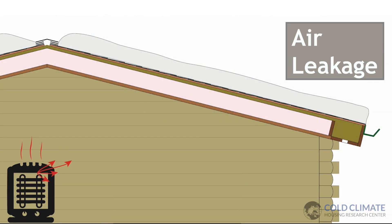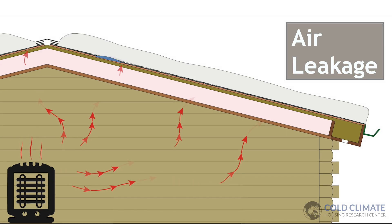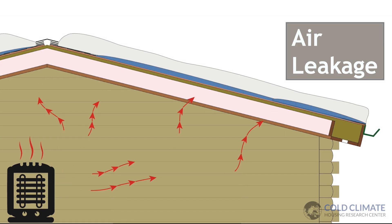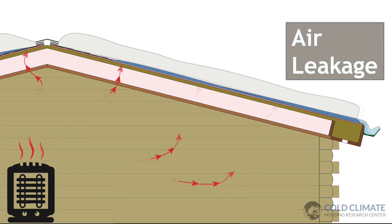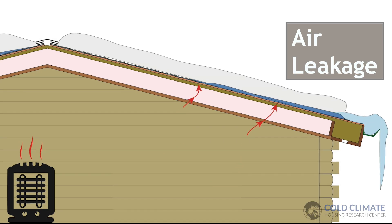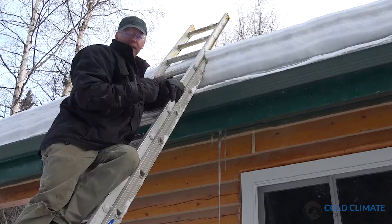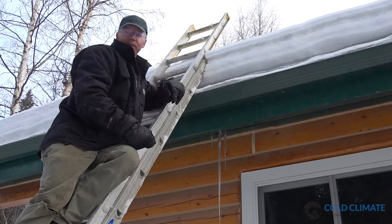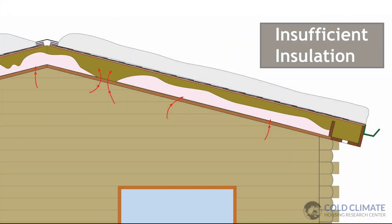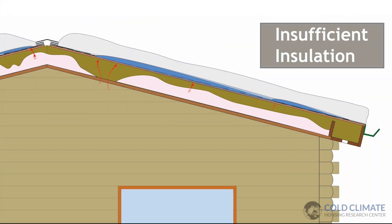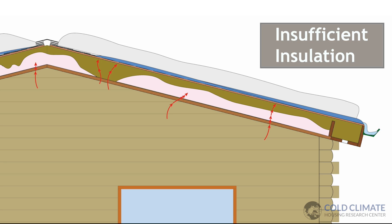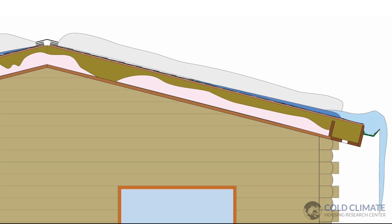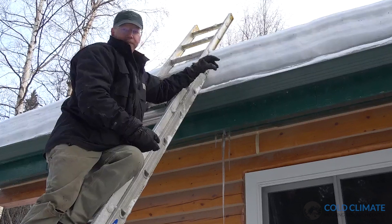The first condition is air leakage — that means we have holes in the ceiling indoors and warm air is escaping and going up into our rafter bay, warming up our roof deck. The second condition is insufficient insulation: either the insulation was installed poorly or there simply wasn't enough, so there are conductive heat losses going through this roof assembly and warming the roof deck.